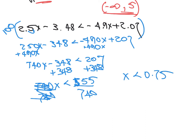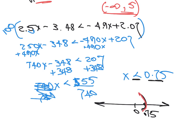The problem doesn't say to graph it, but if we were to graph it, put 0 on the number line and since 0.75 is positive, mark it to the right of 0. Since it's strictly less than, use a rounded parenthesis at 0.75 and draw everything to the left. In interval notation that would be negative infinity to 0.75, rounded, because it doesn't include 0.75.